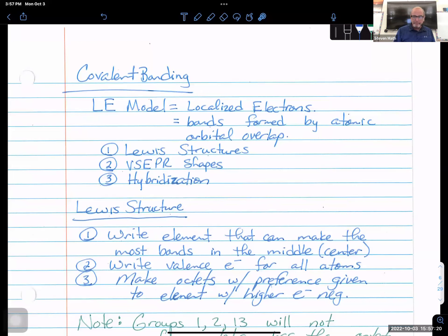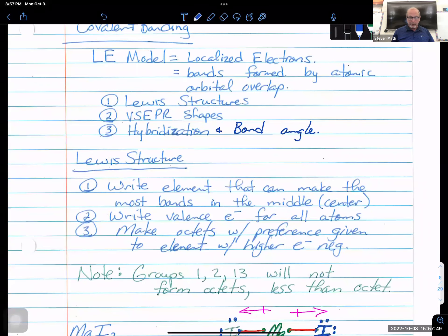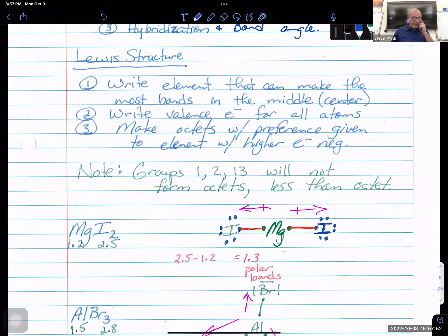So this localized electron model, the name implies the electrons are staying with their atoms. They're local. They're not delocalized like metallic bonds where electrons are free to move. These are localized electrons. And we're going to describe them by looking at their Lewis structure. Okay, so we're going to have to draw Lewis structures, their VSEPR shapes, and what's their hybridization and bond angle comes along with that.